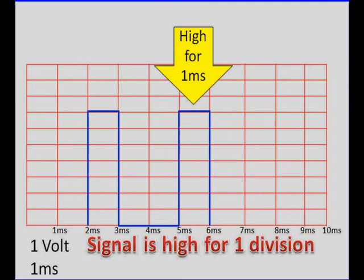To measure time, we measure it from left to right. We're pointing to a second pulse here. They're both the same size. But one starts at five milliseconds and goes to six milliseconds. That is one division. And since we're at one division per millisecond, that is one millisecond in time.